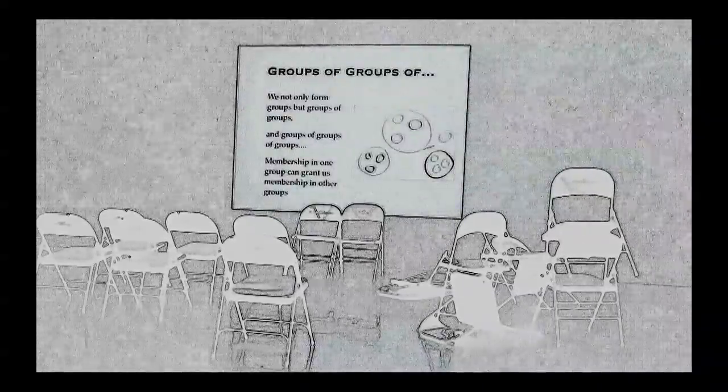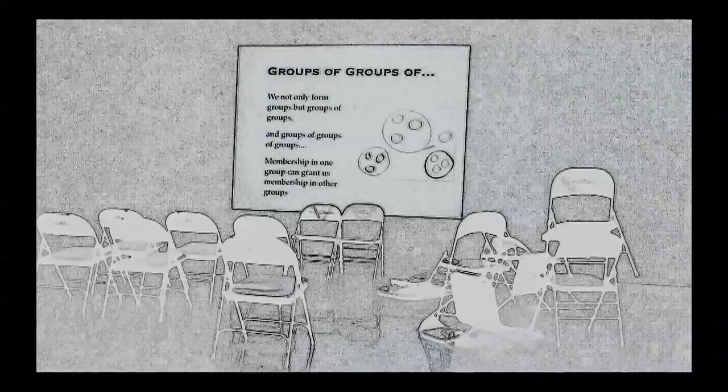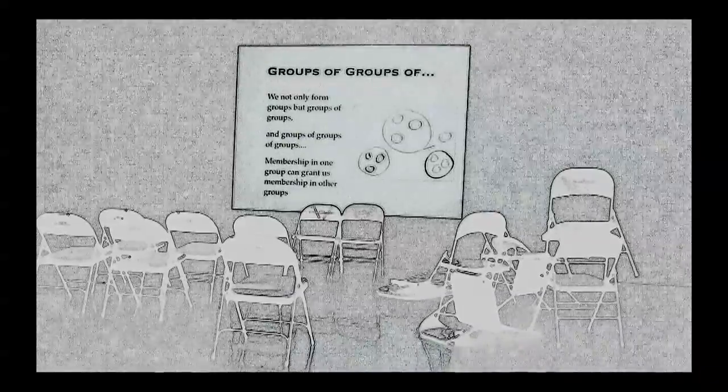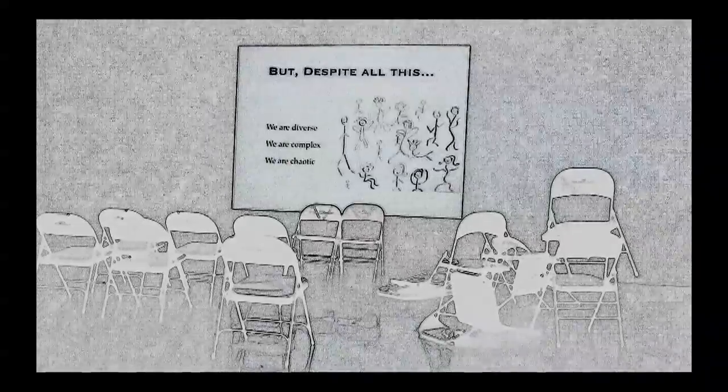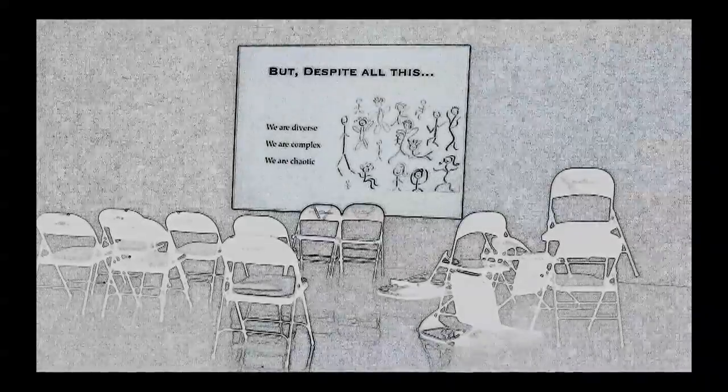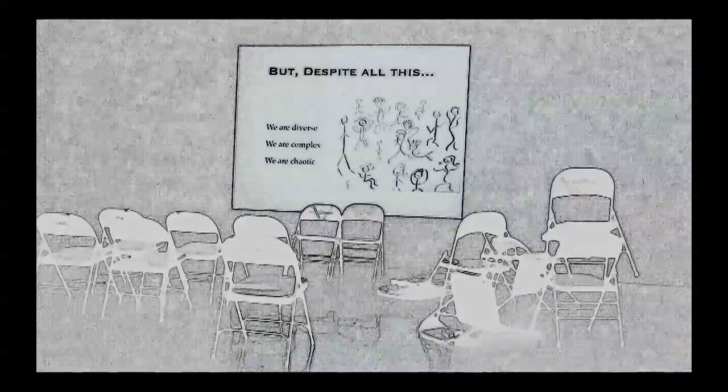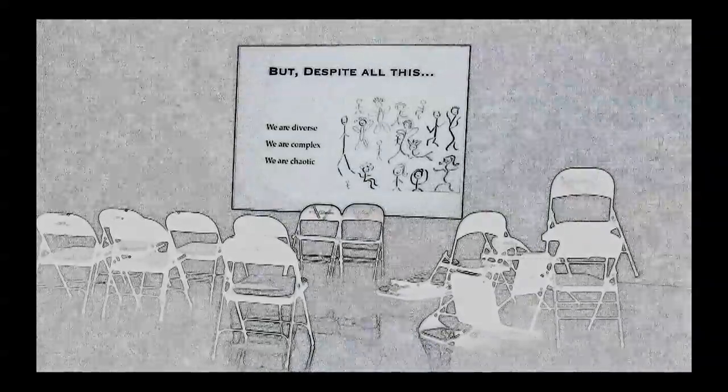Some groups are more fluid, while others are more fixed. We not only form groups, but groups of groups and groups of groups of groups. Membership in one group will grant us membership in other groups. But despite all this, we are diverse. We are complex. We are chaotic.